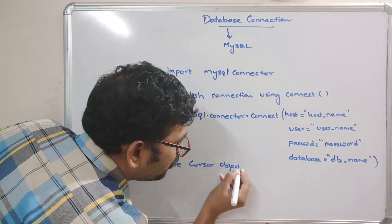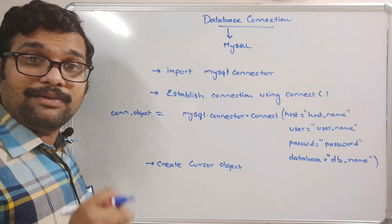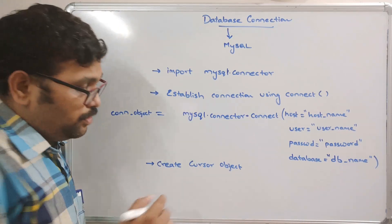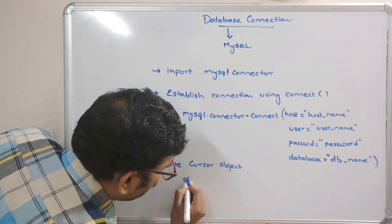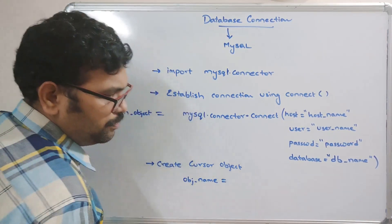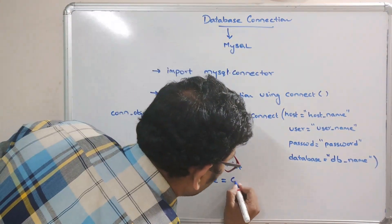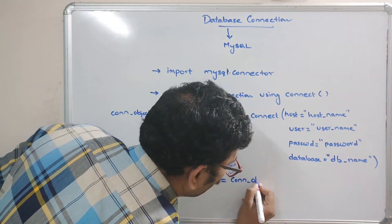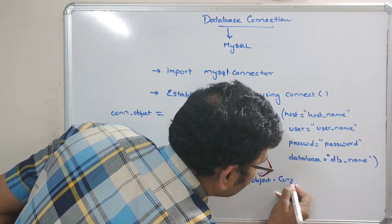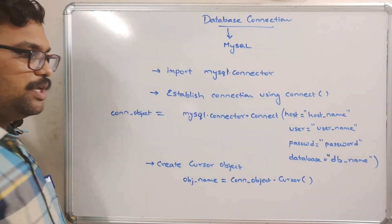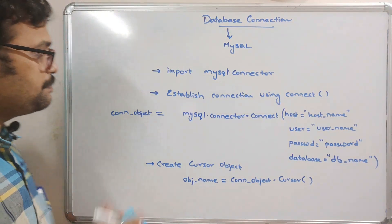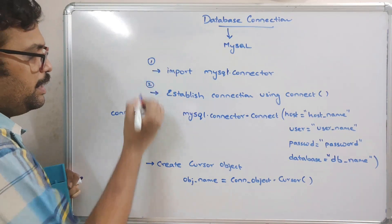The third step is to create a cursor object. In order to execute a query, that query must be written with the help of the cursor object. The syntax is: cursor_object = connection_object.cursor(). So we call the cursor method on the connection object to get our cursor.